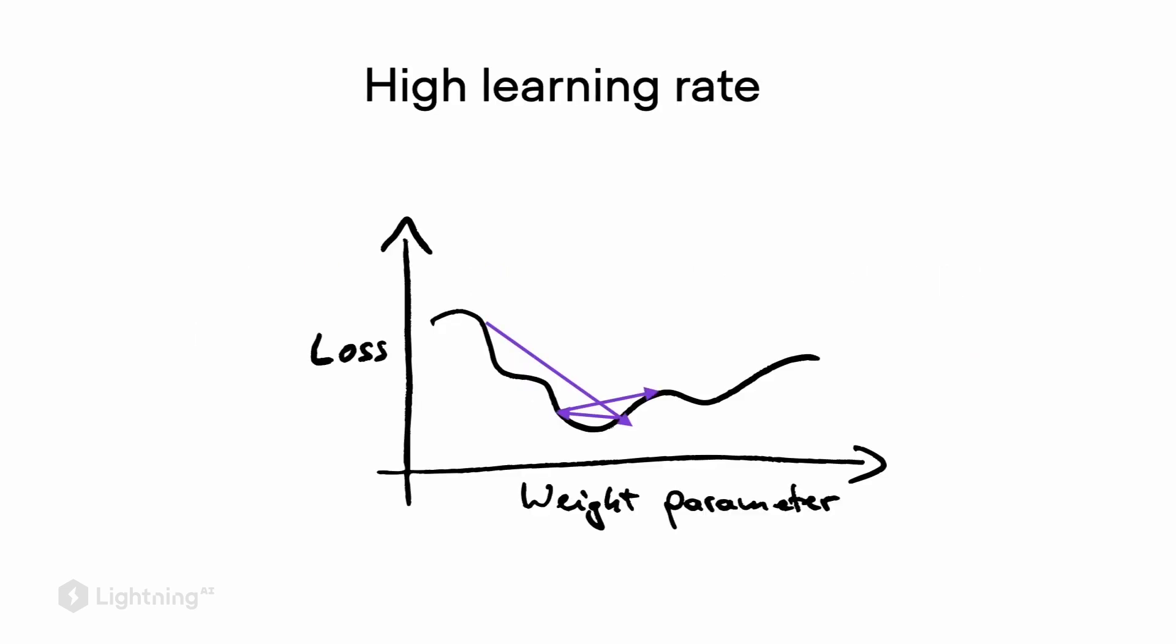Here I have a sketch highlighting the issue of a high learning rate. On the y-axis you see the loss, and on the x-axis you see the value of a particular weight parameter in the neural network. A neural network consists of many, many different weight parameters, and here we are only looking at a single one, and how the loss behaves for different values of that weight parameter.